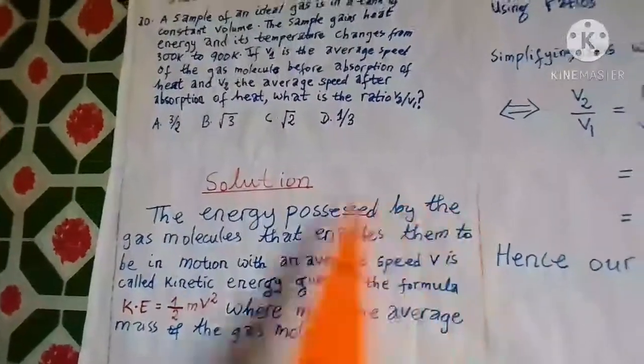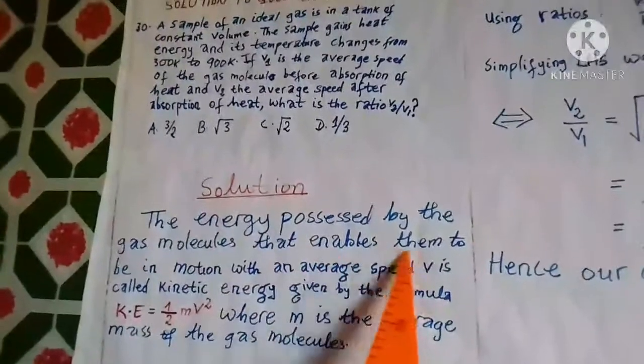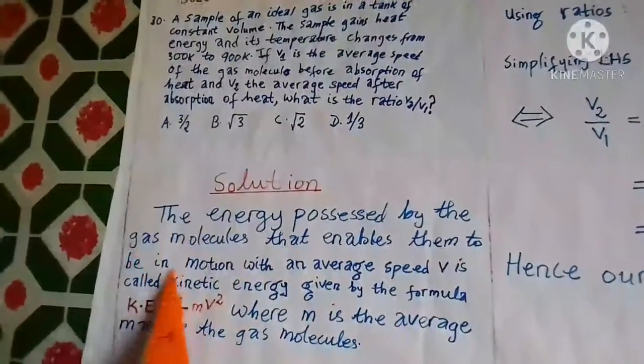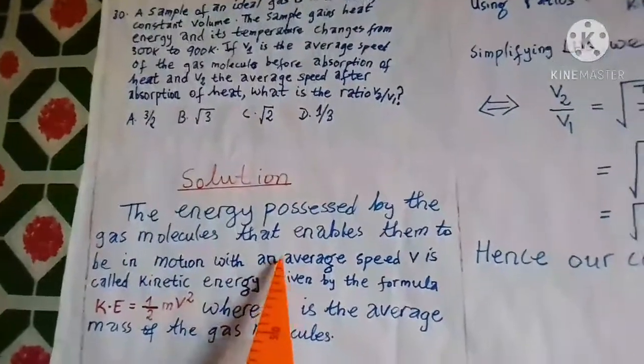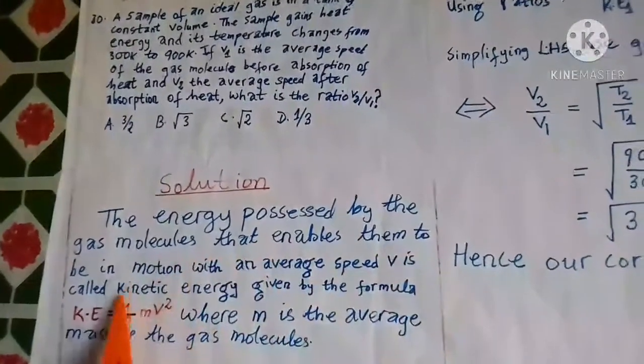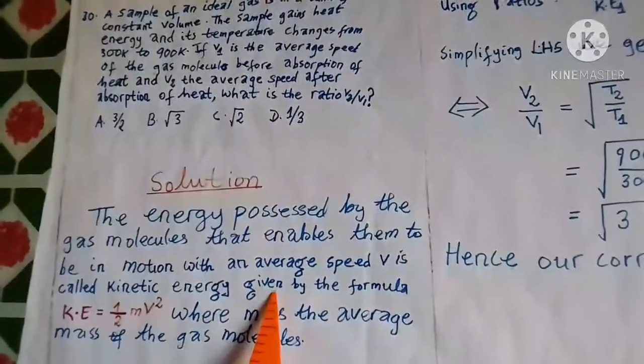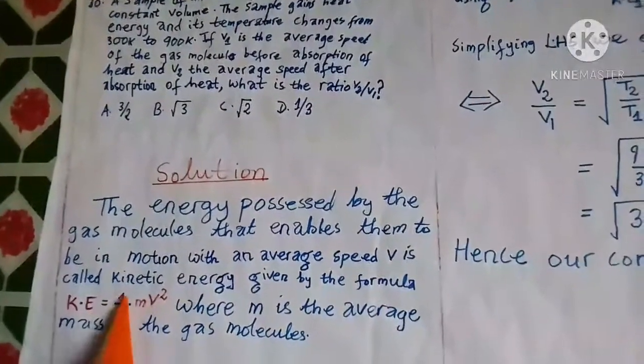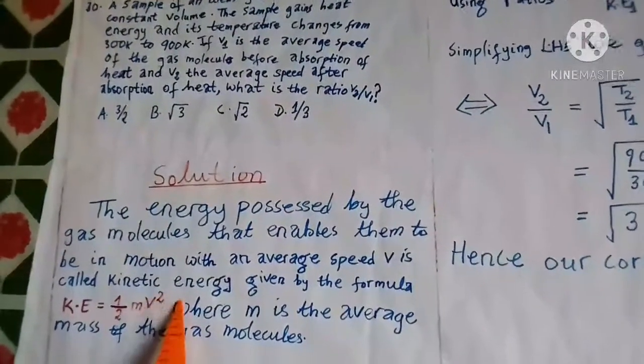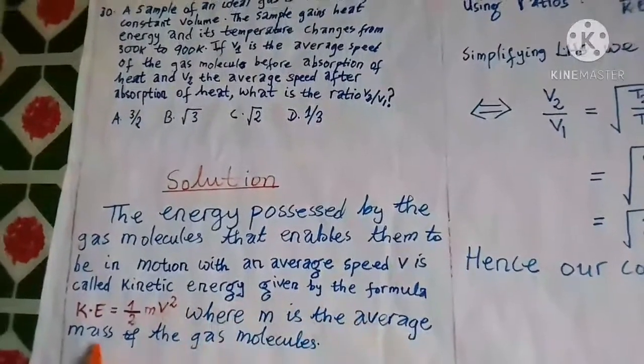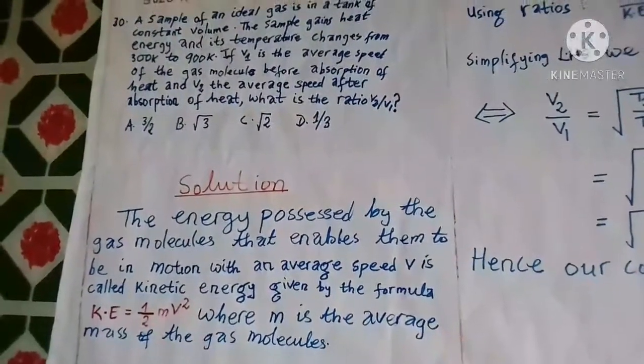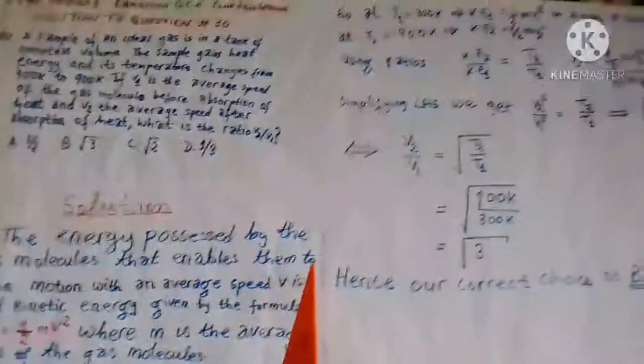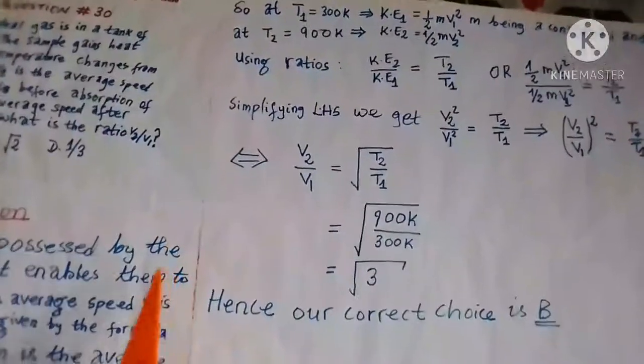The solution to this problem is as follows. The energy possessed by the gas molecules that enables them to be in motion with an average speed V is called kinetic energy, given by the formula KE = 1/2 mv², where m is the average mass of the gas molecules.